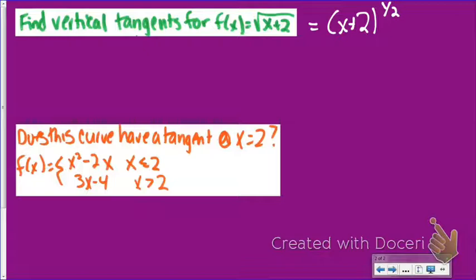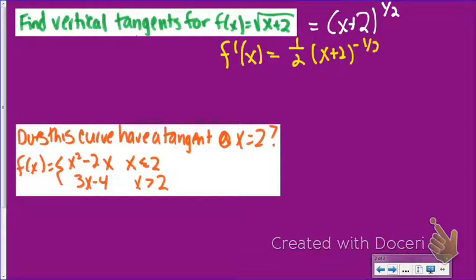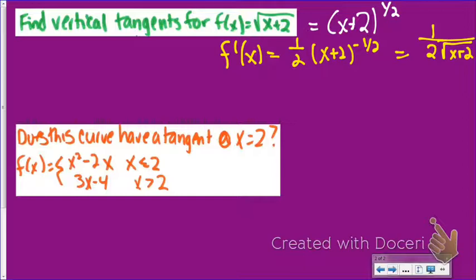We'll treat this just like a normal power rule derivative, but only because the inside derivative happens to be 1 — this isn't how you'll do it later with the chain rule. Using the power rule, I bring 1/2 to the front and subtract 1 from the exponent, giving 1 over 2 times the square root of x plus 2. For a vertical tangent, the derivative must be undefined, meaning the denominator equals 0. The x value that makes the bottom 0 is x equals negative 2, so that's where the vertical tangent occurs.